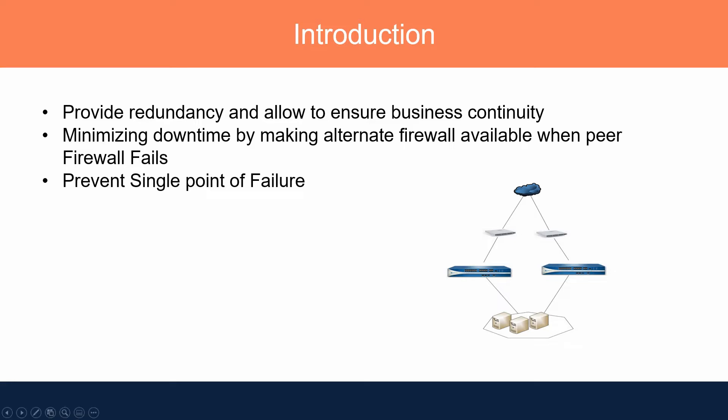In the diagram, you have two firewalls configured in HA. If an internal user is trying to access internet resources and one firewall fails, the other firewall will take over its functions. The user will not experience any outage. HA minimizes downtime by making an alternate firewall available when the primary fails, preventing a single point of failure. Without HA, if your single firewall fails, your entire business and production goes down.